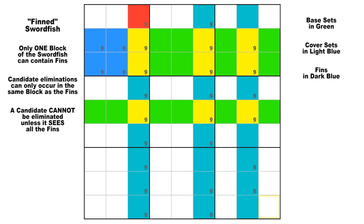Now before we go through some examples, let's take a look at some rare variations. If you see something like this, where two of the base sets lie in the same chute, here being rows 2 and 3, it is possible to have up to four fins, as you can see in those dark blue cells, in row 2, column 1 and 2, and row 3, column 1 and 2.